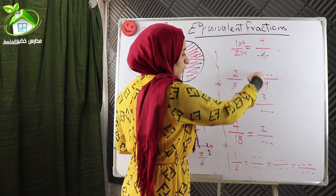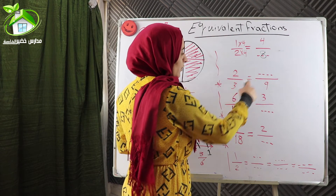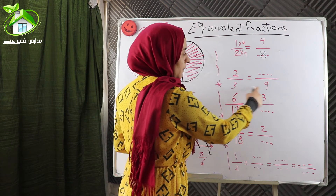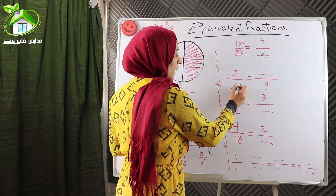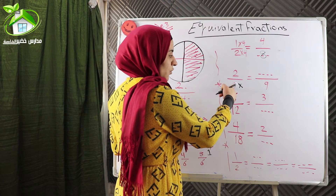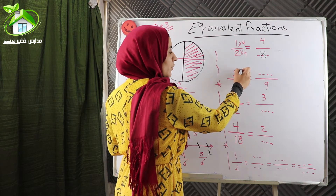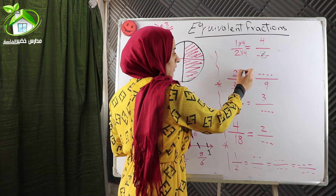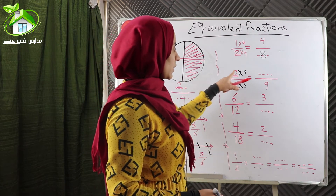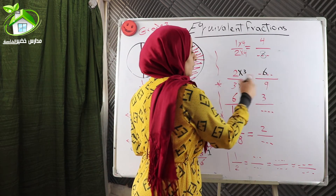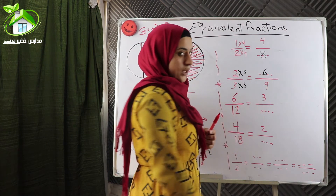Let's see the next example. Two over three becomes what over nine. We don't find the missing number in the numerator, so look at the denominator. Three becomes nine — three becomes greater, so we will multiply. Three times what equals nine? Three times three. We should multiply the numerator also by three. Two times three equals six. So two over three equals six over nine.